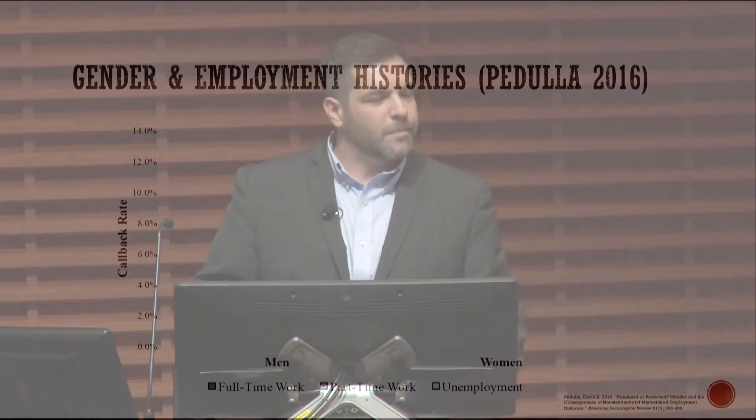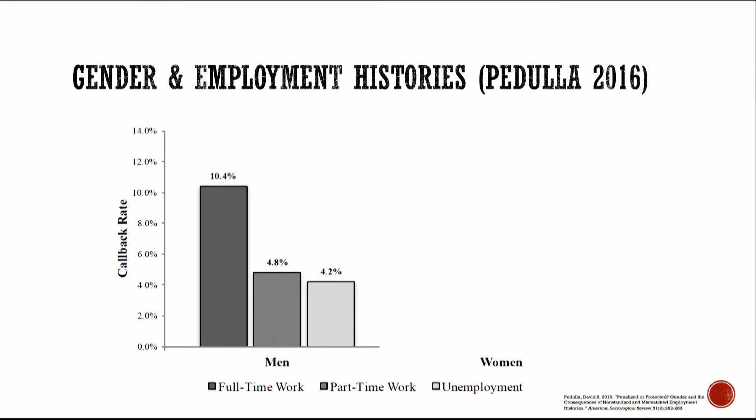The next study is from my own scholarship, examining how gender intersects with different types of employment histories at the hiring interface. I manipulated gender using names and manipulated applicants' employment histories: some received a full-time, seamless employment history; others were assigned one year of part-time work; and another group was assigned a year of unemployment or a gap on their resume. For men with seamless full-time employment histories, the callback rate is 10.4%. With a part-time job for a year, it drops to 4.8% — a strong negative penalty — and with a year of unemployment, the callback rate is 4.2%. So for men, part-time work looks a lot like unemployment.